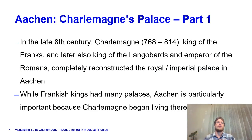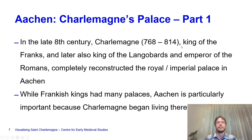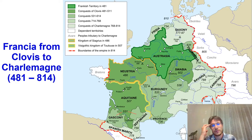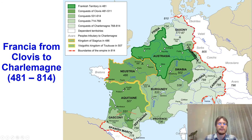In the late 8th century, Charlemagne, king of the Franks and later also king of the Langobards and emperor of the Romans, completely reconstructed the royal and imperial palace in Aachen. While Frankish kings had many palaces, Aachen is particularly important because Charlemagne began living there permanently. Previous rulers would have just moved from palace to palace—Reims, Paris, Laon, and so on.